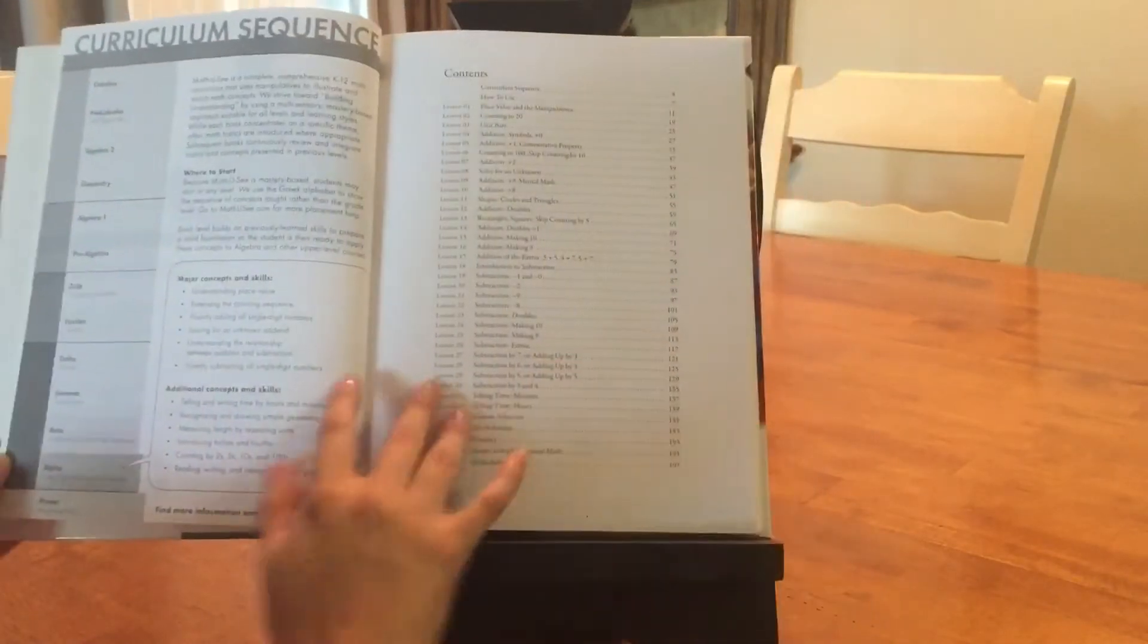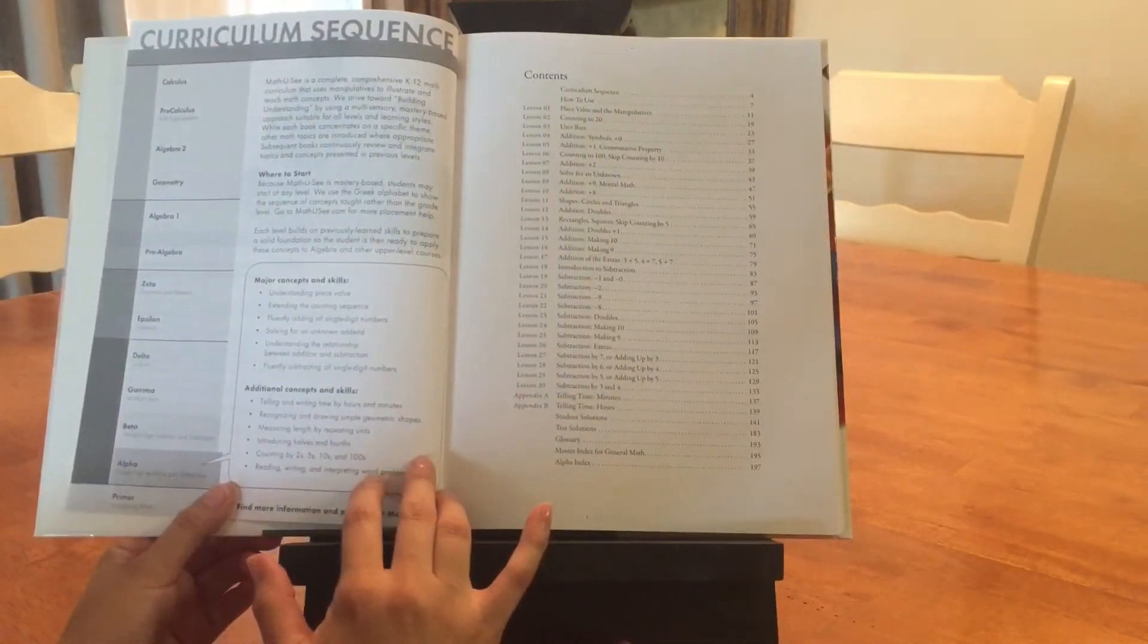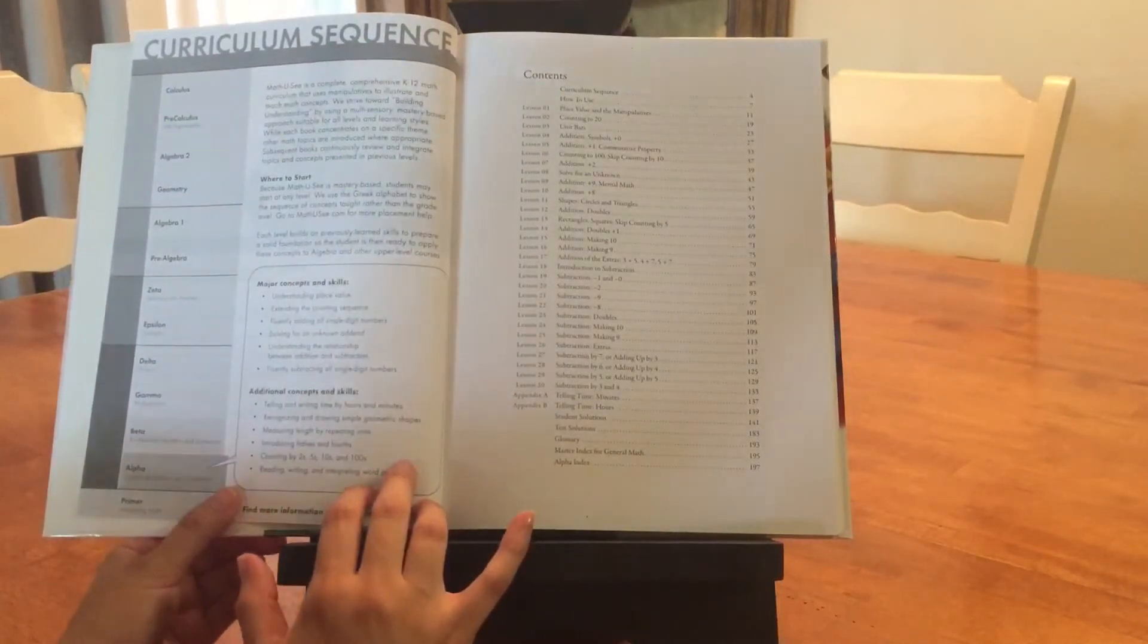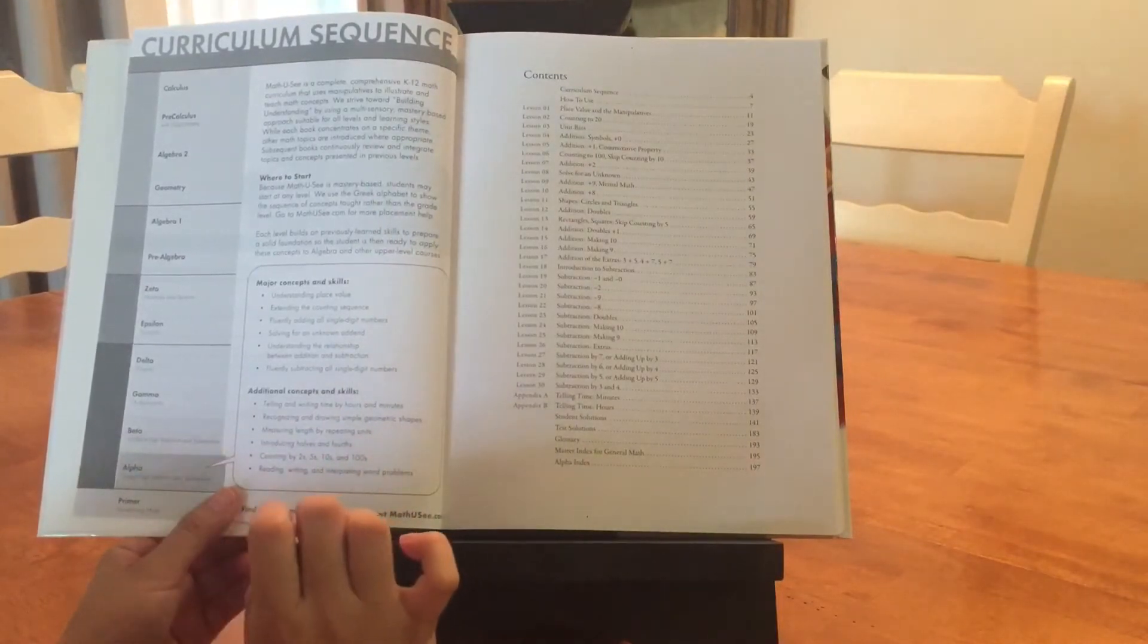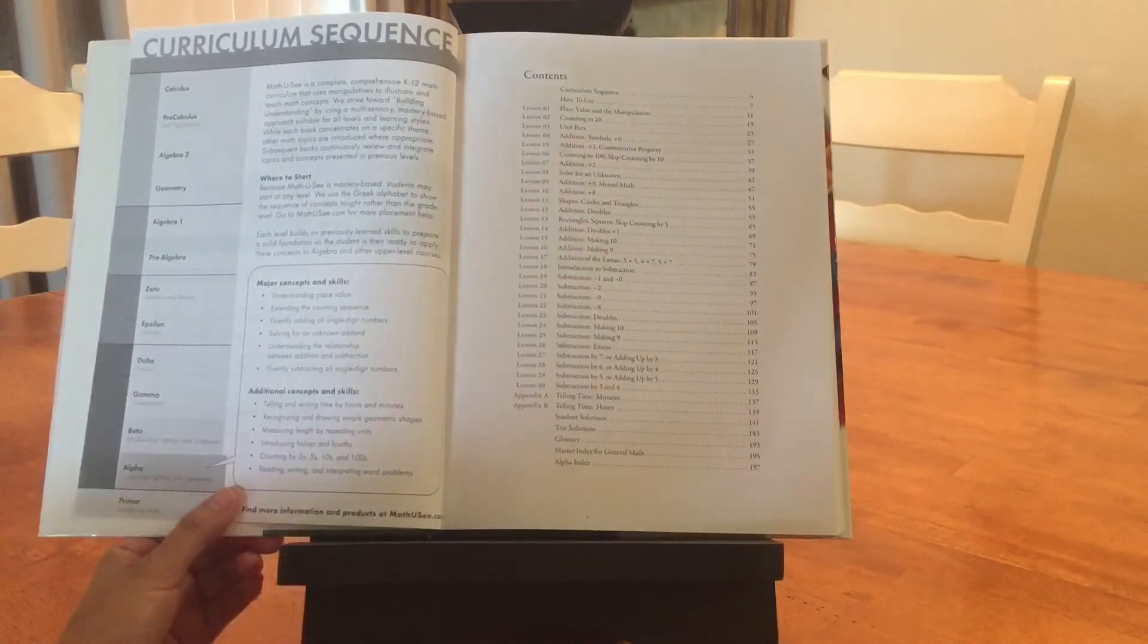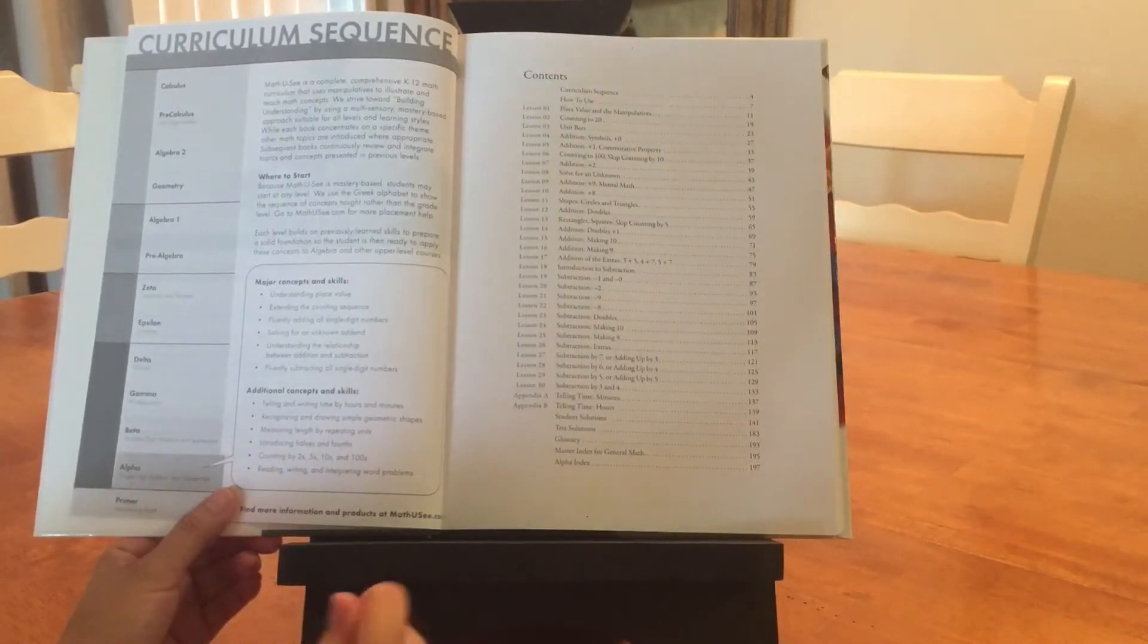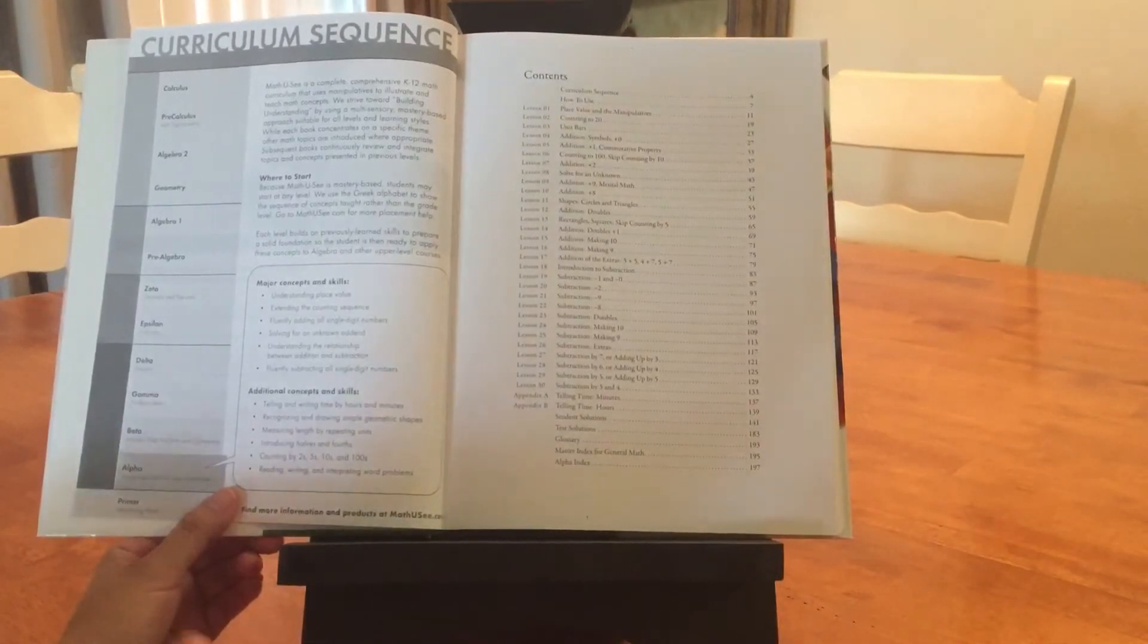These are the things they will be working on in this book: place value, counting to 20, addition - first they learn all their plus zeros, plus ones, counting to 100, skip counting by 10, all the plus two addition facts, and solving for the unknown, which gives you a math problem and you have to solve the missing number.